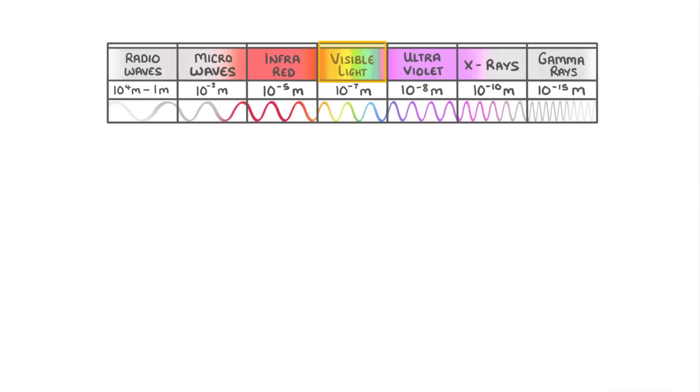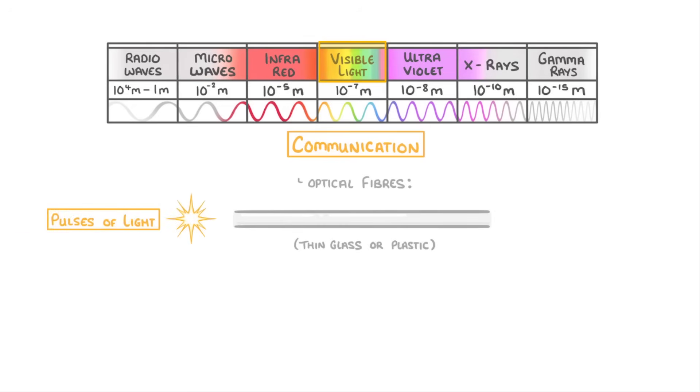As well as using it to look at things, visible light can also be used for communication using optical fibres. These are thin glass or plastic fibres that are able to transmit pulses of light over long distances.